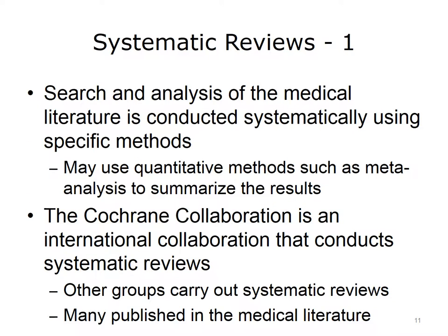Often there are many studies on a given topic that provide evidence for clinical decisions. One method for aggregating all this evidence is to conduct a systematic review. In a systematic review, authors systematically and exhaustively search the medical literature for the topic under discussion. Sometimes a systematic review will use quantitative methods such as meta-analysis to combine the results from many different studies as if they were a single study. One of the most prolific producers of systematic reviews is the Cochrane Collaboration — a worldwide association of researchers and clinicians who create and maintain systematic reviews, with periodic updates to keep them current and relevant.